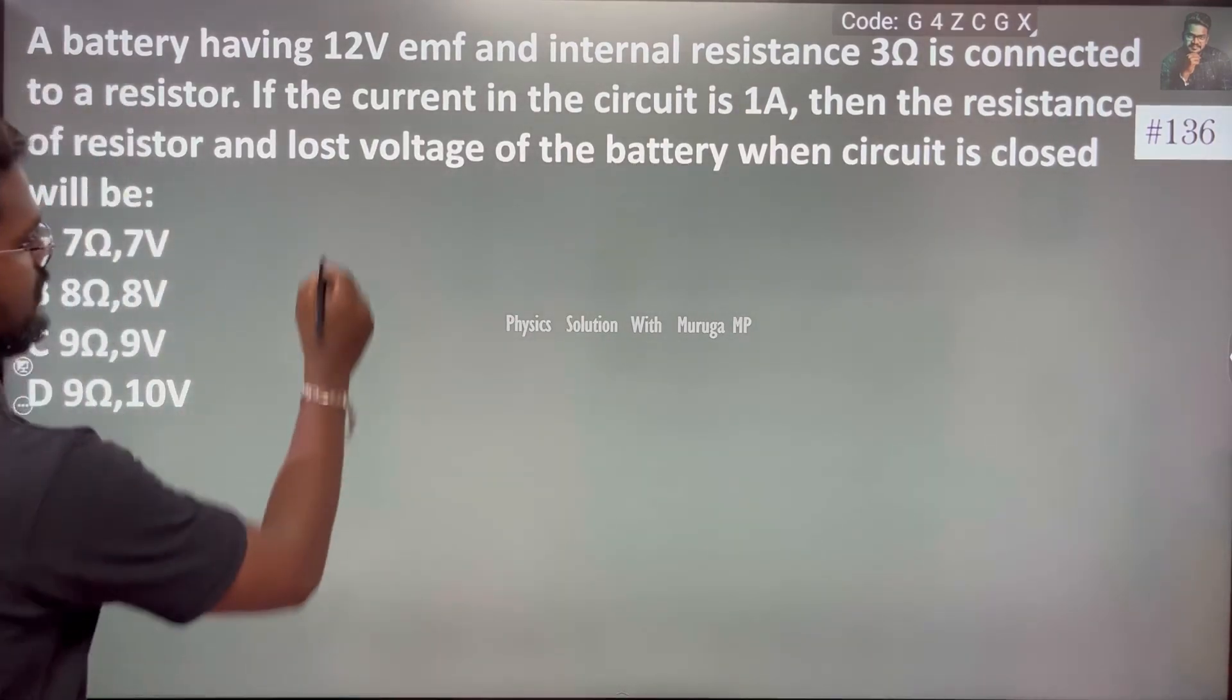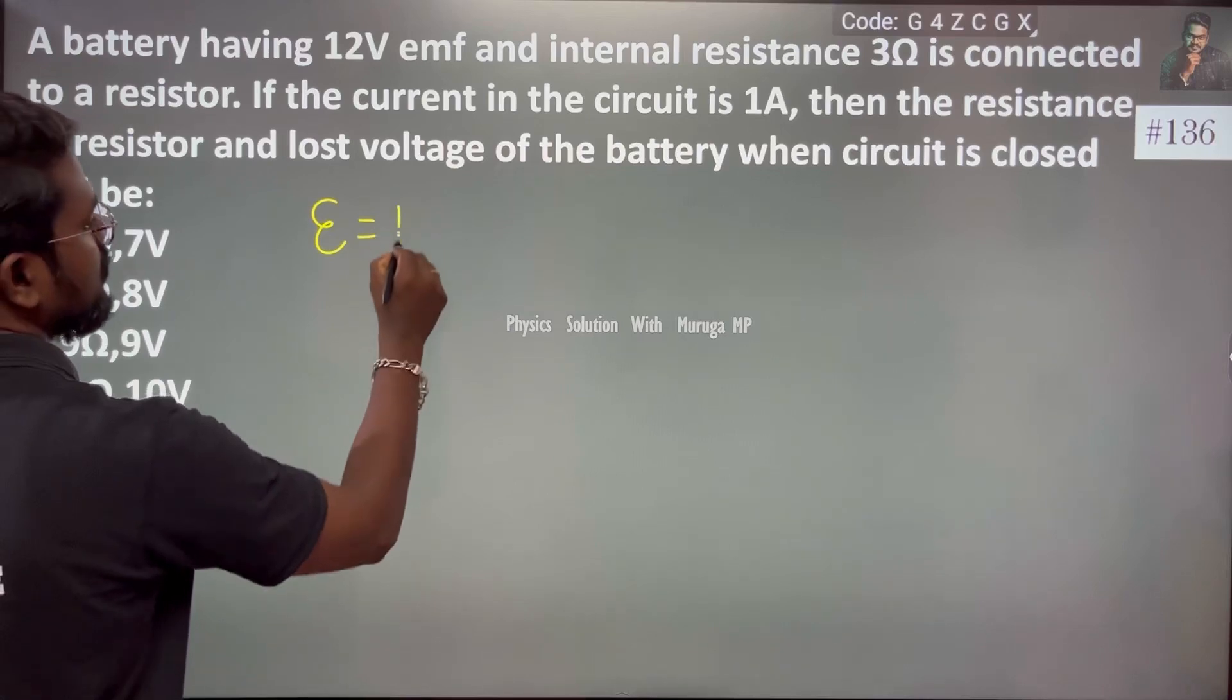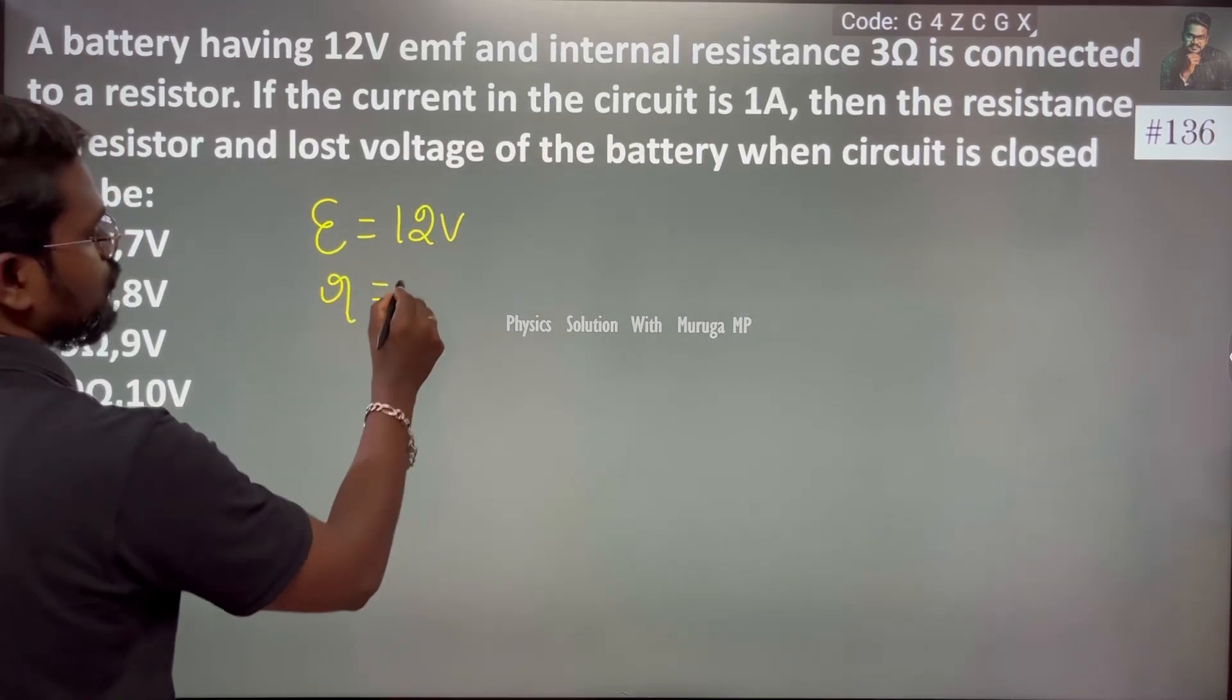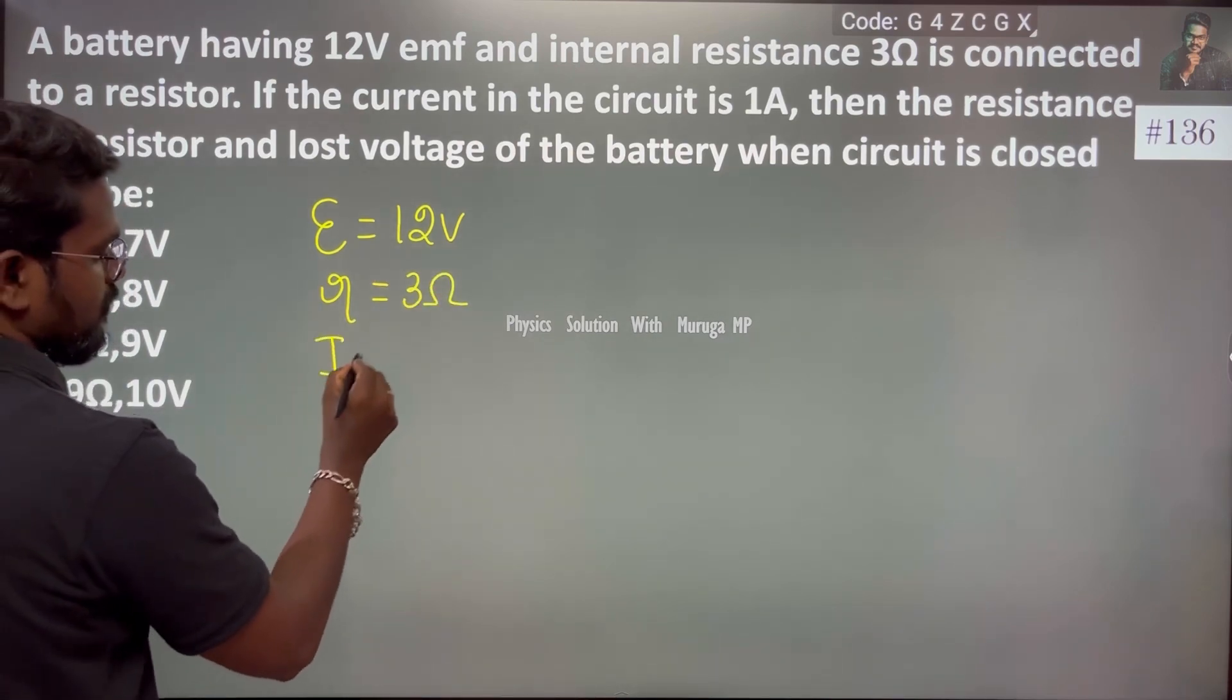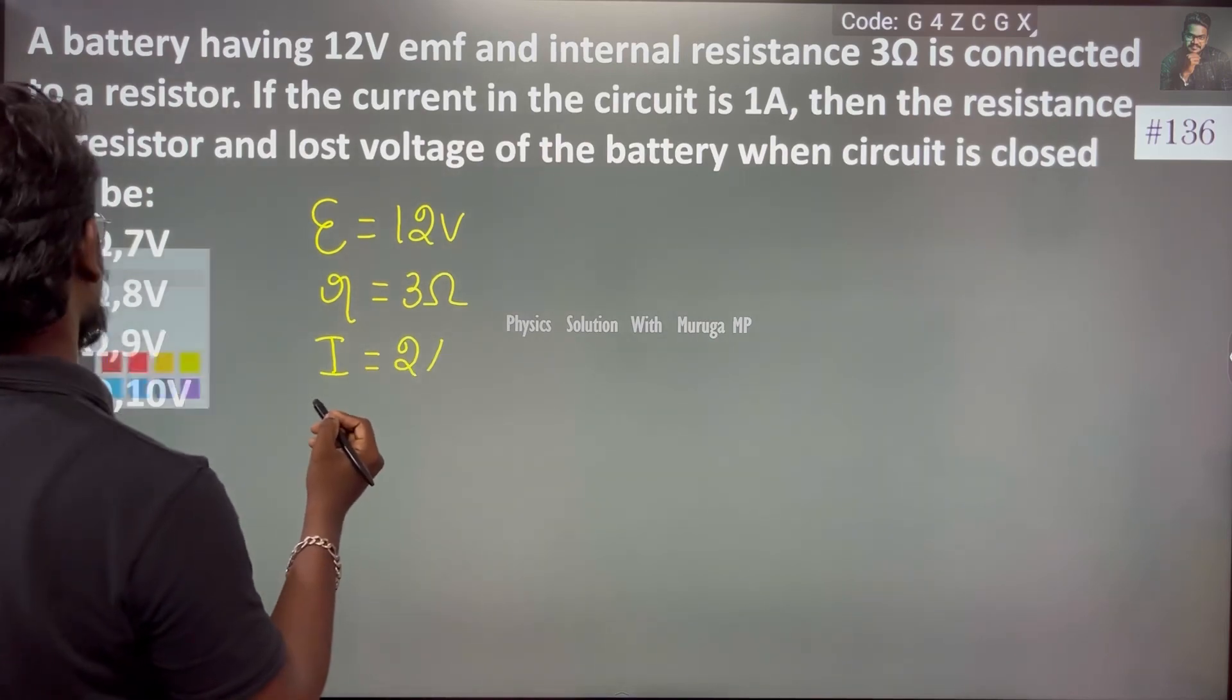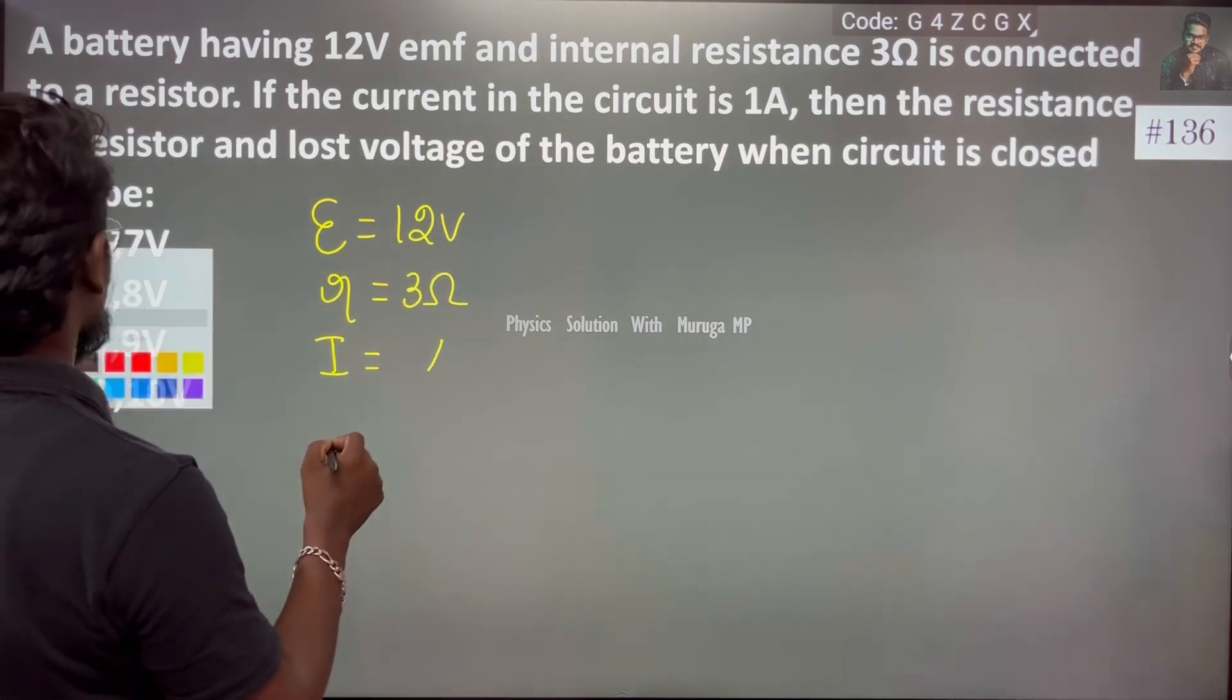The first given data: EMF is 12V, internal resistance is 3Ω. If the circuit is closed, the current is 1 ampere.